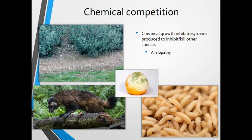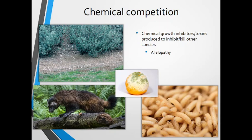Chemical competition is most common in plants — it's called allelopathy, where plants produce some sort of chemical growth inhibitor or toxin. We already talked about black walnut trees doing this. You can often see areas with a single species growing and a bunch of bare ground underneath, because there are toxins in the soil that kill everything else. This means all the resources — all the light and nutrients in the soil — go to that one species alone.